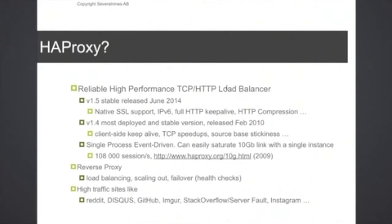HAProxy is primarily used as a load balancer for the application and web tier, but it's also an excellent tool for database back-ends. This project started around 2000 and was initially a hack to rewrite some HTTP headers during a benchmark test. The first stable version came out around 2001, so it's been around for quite some time — it's very battle-tested and proven in the field.